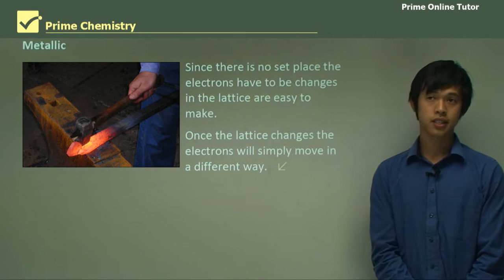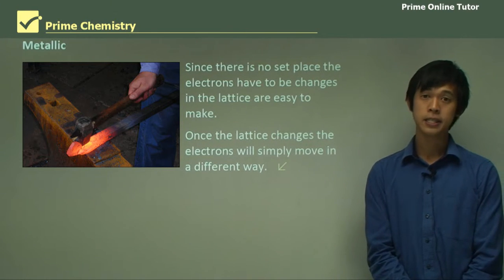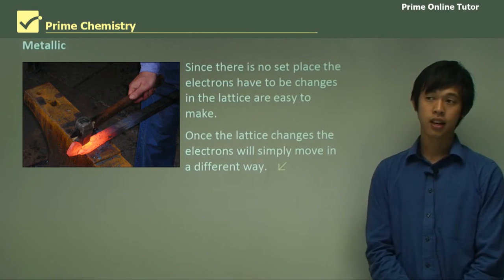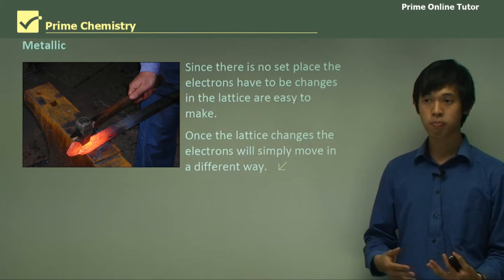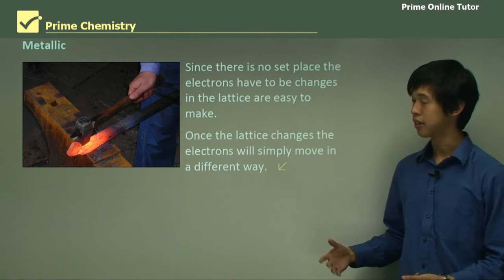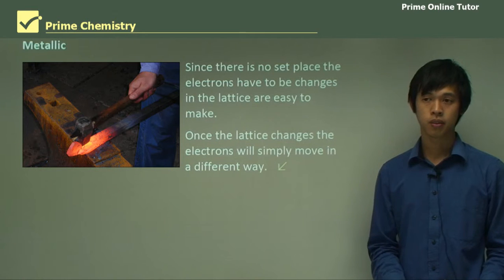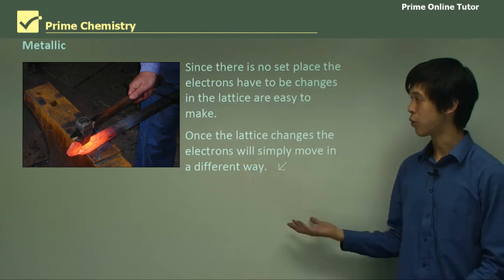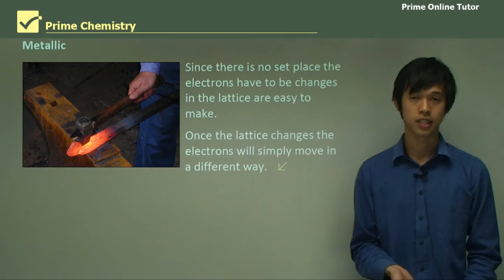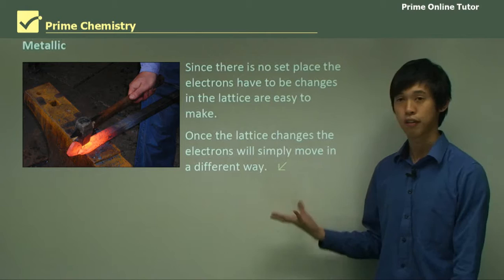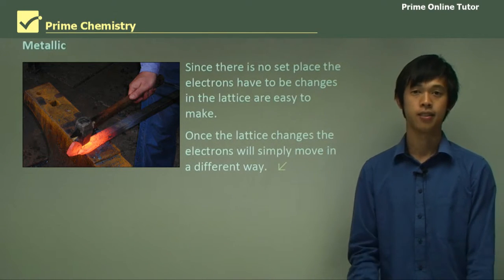So that concludes today's lesson on electrical conductivity and hardness. We looked at these two properties and explained them based on what we know about the different bonding types. We'll move on to the question segment now, and hopefully you'll be able to develop more of an understanding about the four bonding types, electrical conductivity and hardness.